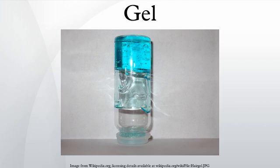These hydrogels have the ability to sense changes of pH, temperature, or the concentration of metabolite and release their load as a result of such a change, serving as sustained release drug delivery systems. They can also provide absorption, desloughing, and debriding of necrotic and fibrotic tissue. Hydrogels that are responsive to specific molecules, such as glucose or antigens, can be used as biosensors, as well as in drug delivery systems.